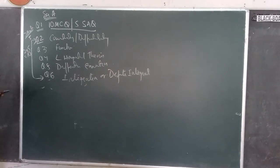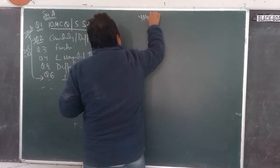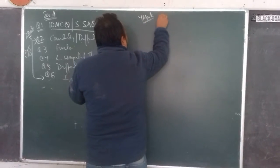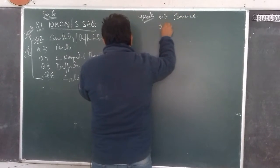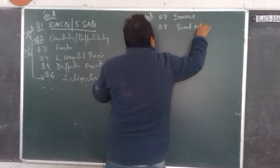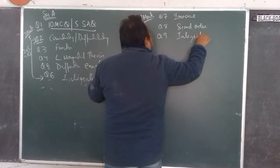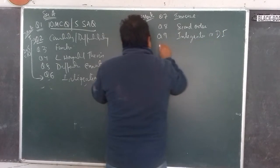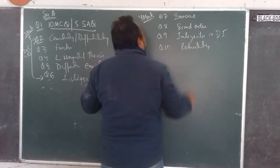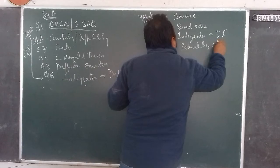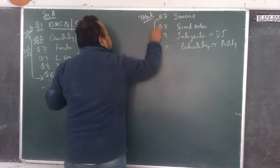For the 4-mark questions, question number 7 will be inverse trigonometry, question number 8 will be second order derivative, question number 9 will be integration or definite integral with an internal choice, and question number 10 will be probability — both questions on probability — so there are two internal choices for questions 9 and 10. That gives 4 × 4 = 16 marks.